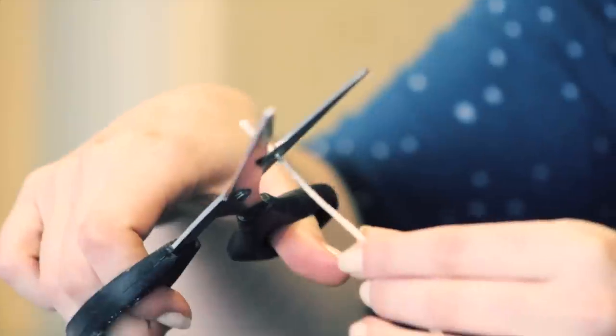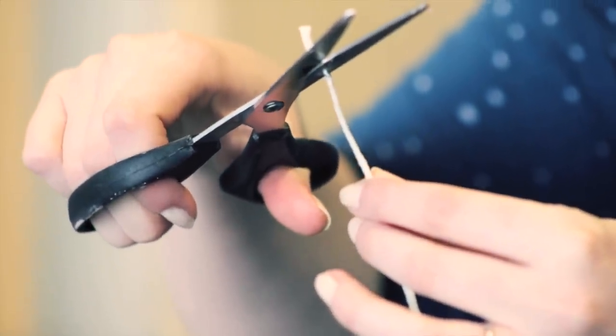Use some scissors to snip below the wick sustainer so you have a flat base. Place the wick into the container. Make sure that you've got plenty of wick spare at the top of the container.